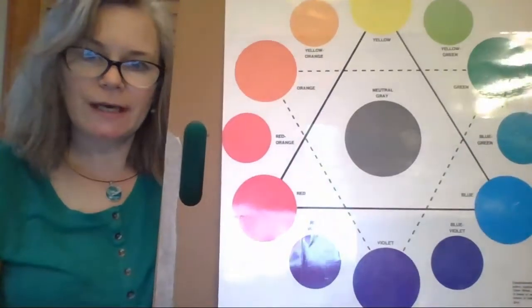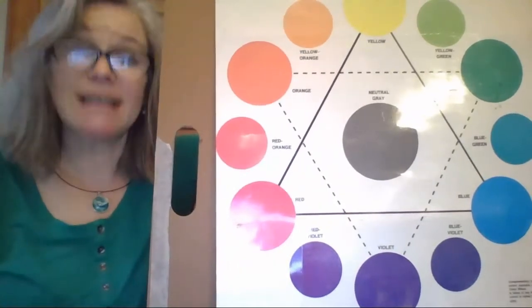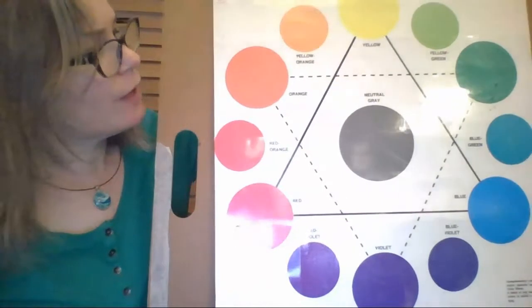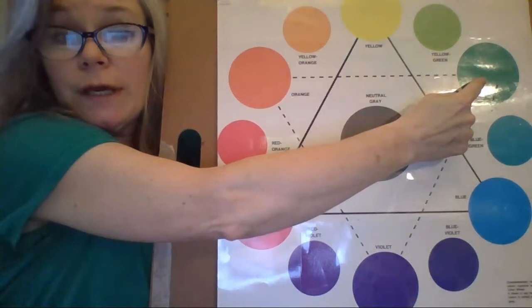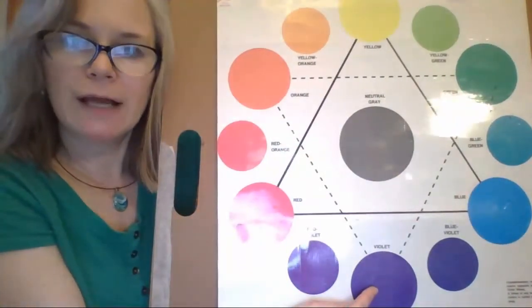The colors that you see with the dotted line are called secondary colors. So the secondary colors are orange, green, and purple or violet.